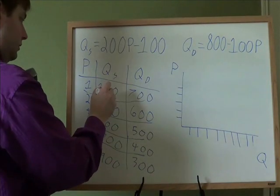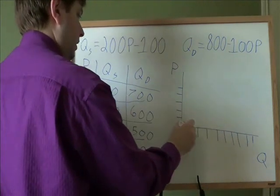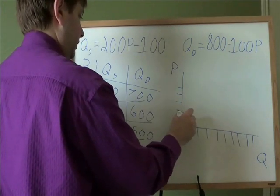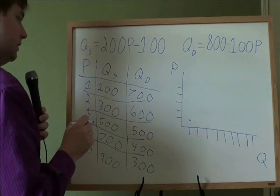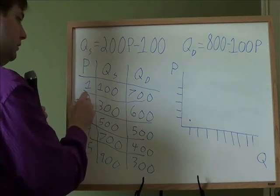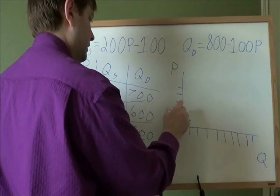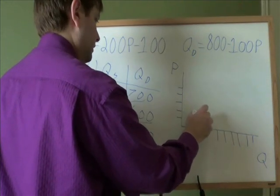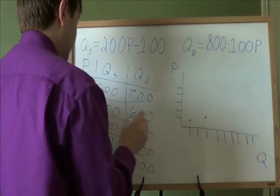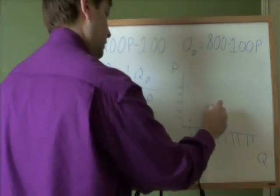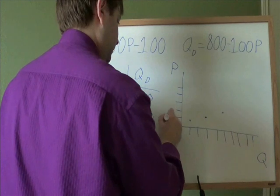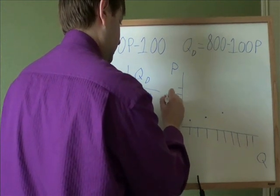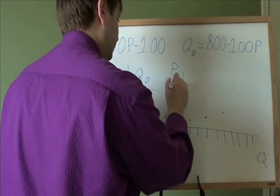So price is $1, quantity supplied is 100. We'll go to $1 and go over to 100. And we're really just doing the x, y points like we did in algebra. If the price is $2 and the quantity is 300, go to price is 2, quantity is 300. At a price of $3, the quantity is 500.